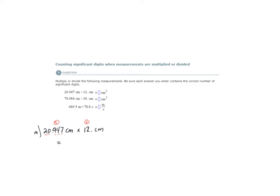Our final answer will be limited to two significant digits. Once I do the calculation in the calculator, I get 251.364. My units will be centimeters times centimeters, which is centimeters squared, as indicated here. And I know I need to round it to two significant digits.